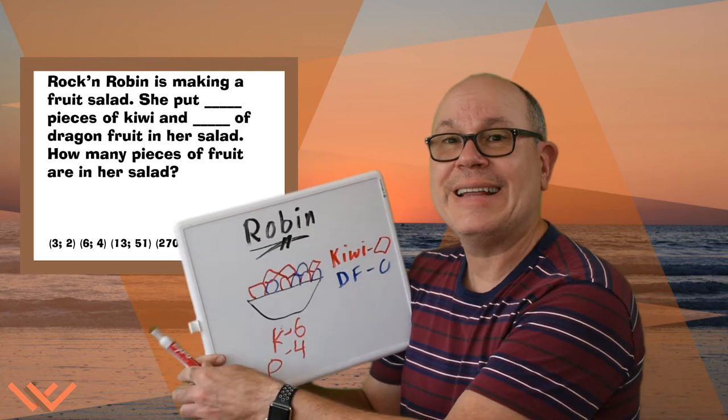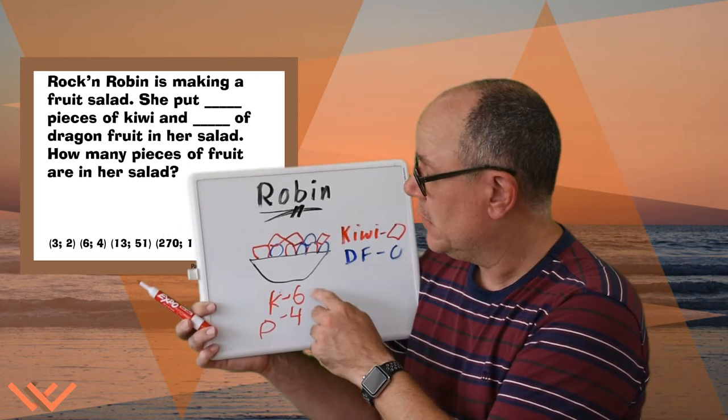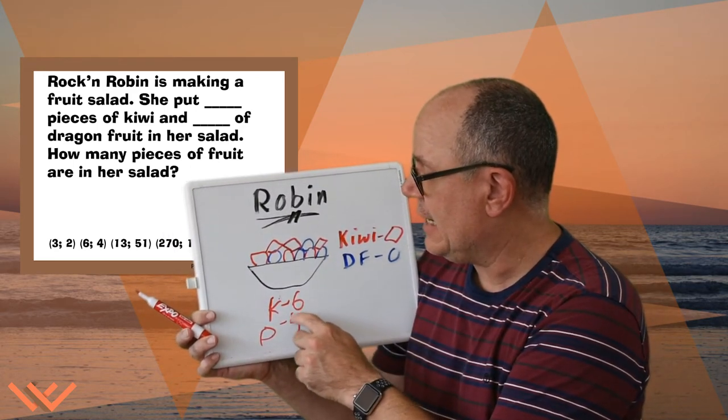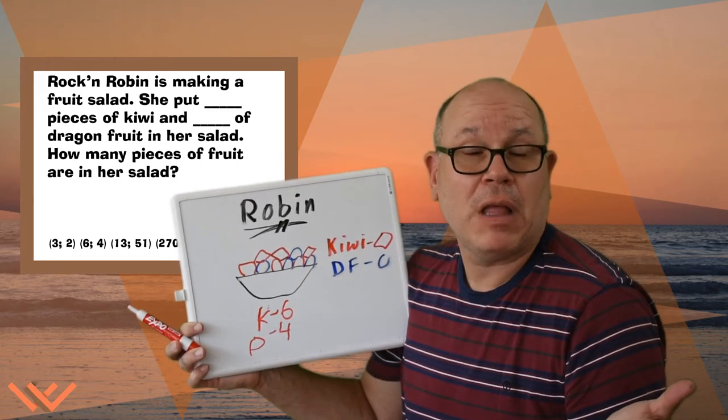So you can either count on: six, seven, eight, nine, ten. That's one way to do it.